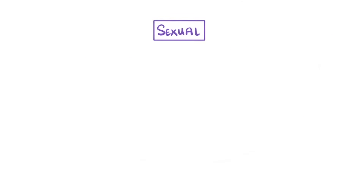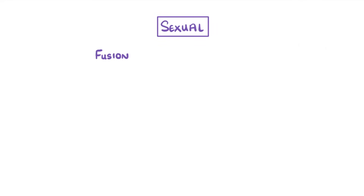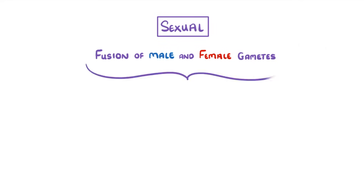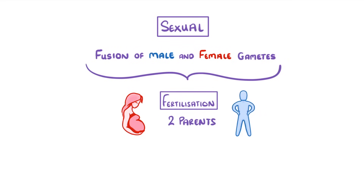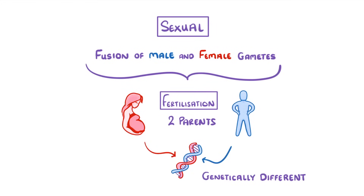Let's start with sexual reproduction. The key point here is that it involves the fusion of male and female gametes, which we call fertilization. And because there are two parents, the offspring contain a mixture of their parents' genes, and so are genetically different. This is why you inherit characteristics from both parents, and it means that over generations, it introduces lots of variation, as each person is different.